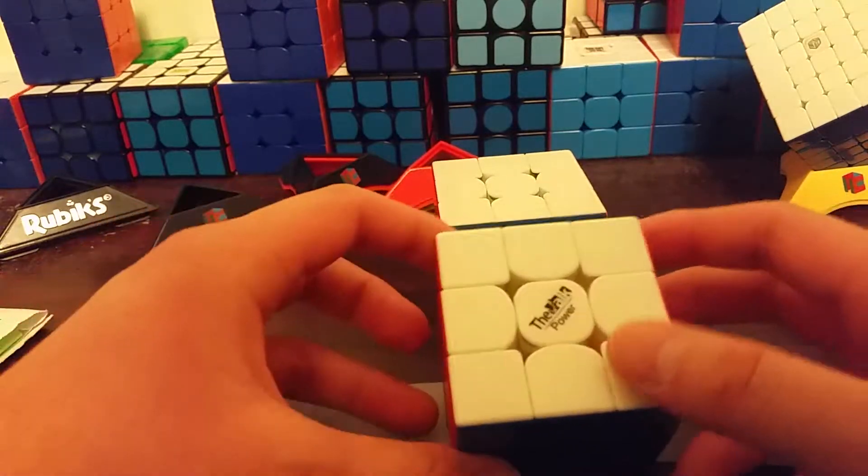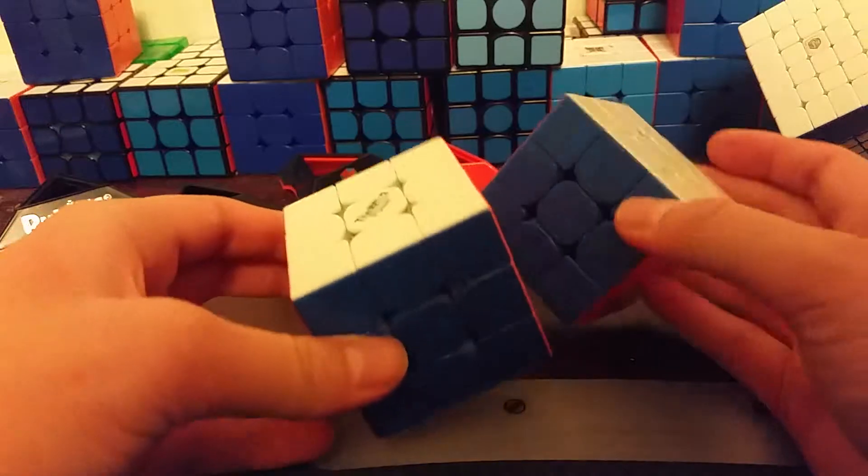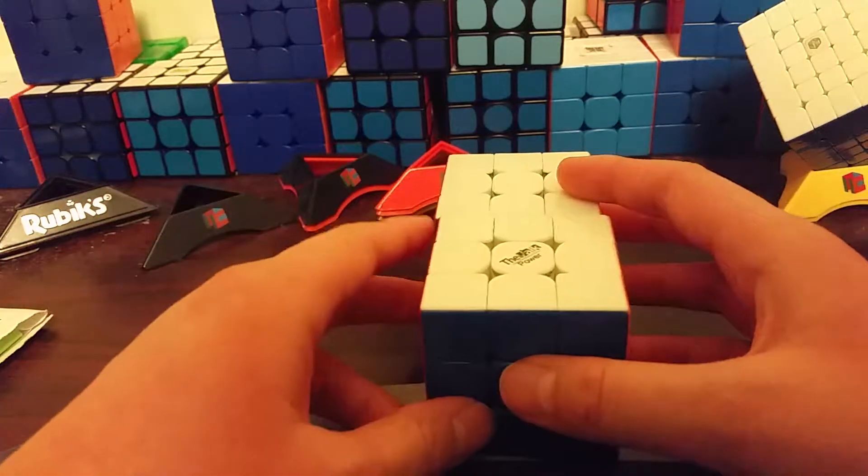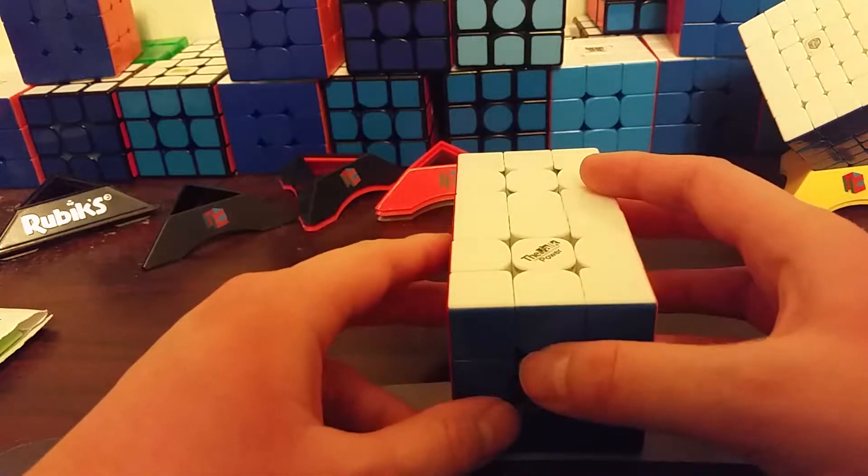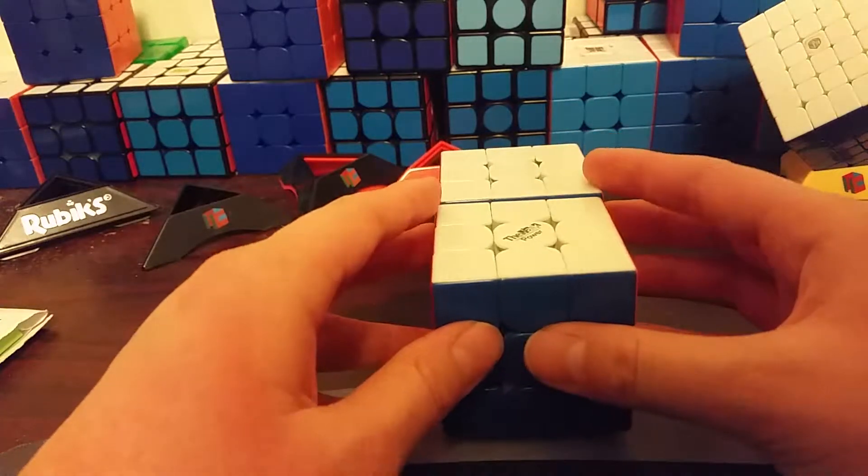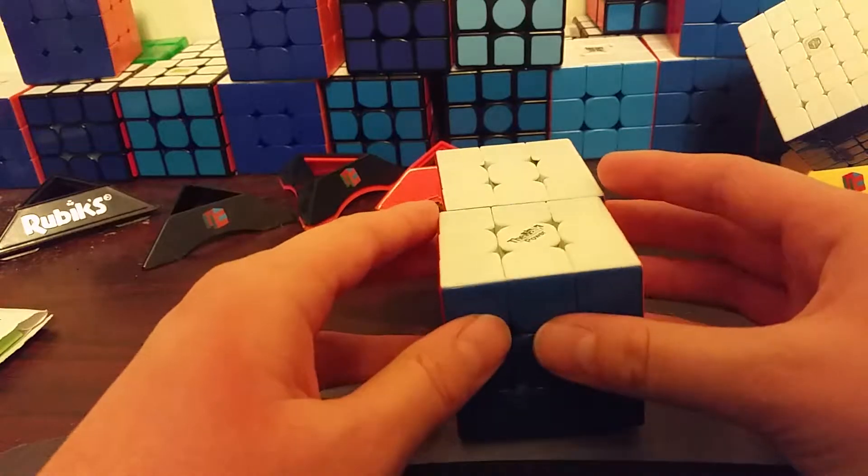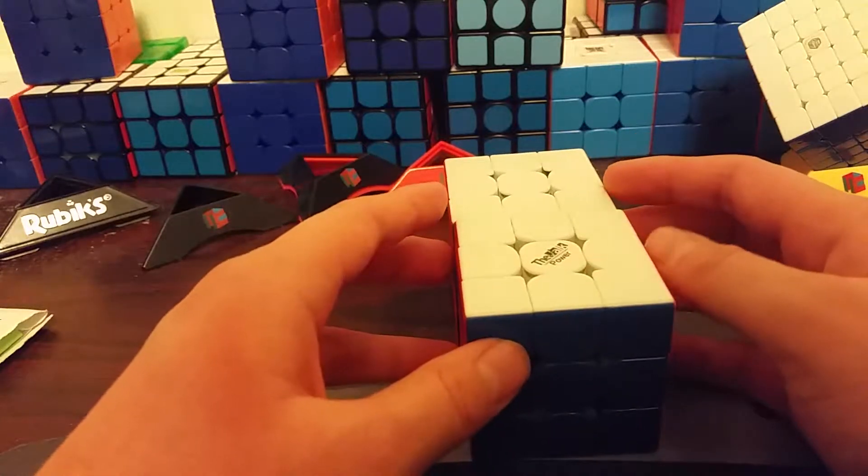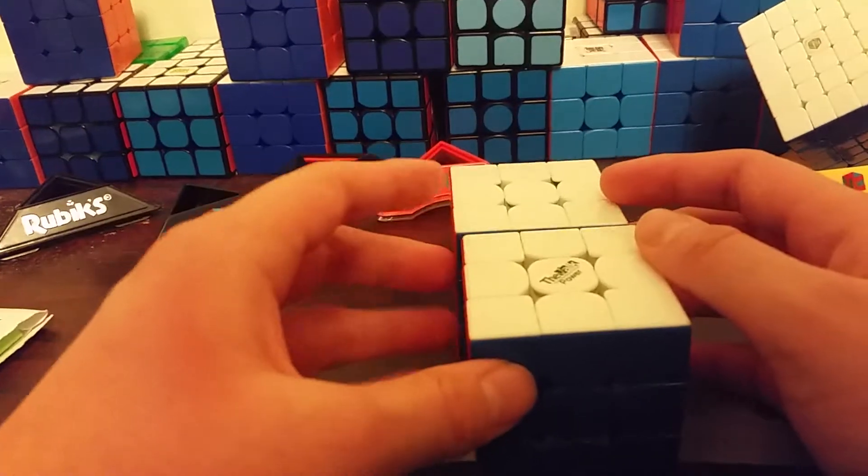Anyways, here are my goals for 3x3. My main is the Volk Power M, and my backup main is the Angstrom Volk M. My single goal is maybe sub 9, if I'm lucky, sub 8.5. On average, I'd be fine with sub 10.5. What I want is sub 10.